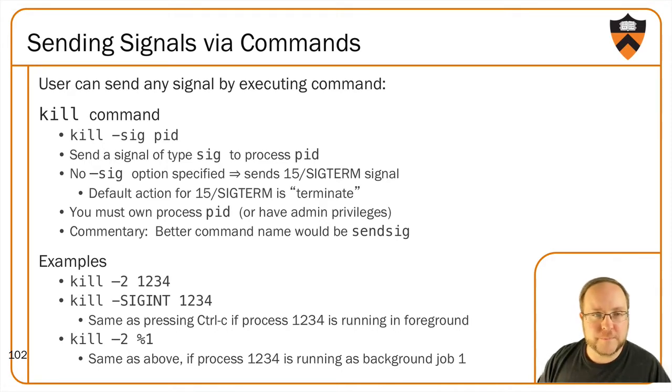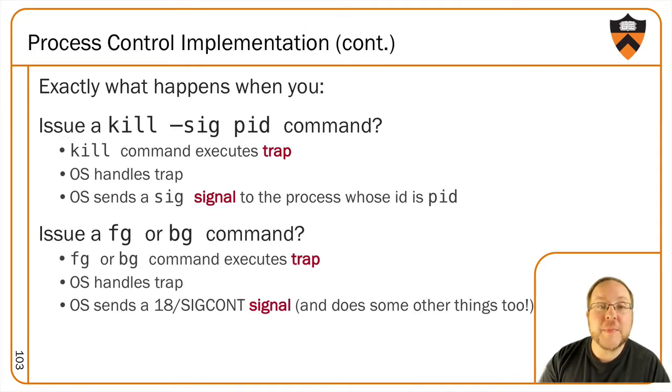So how does this command work? The kill command itself issues a trap to the OS, because sending a signal is something that requires elevated permissions. So it says, OS, I need you to do something on my behalf.